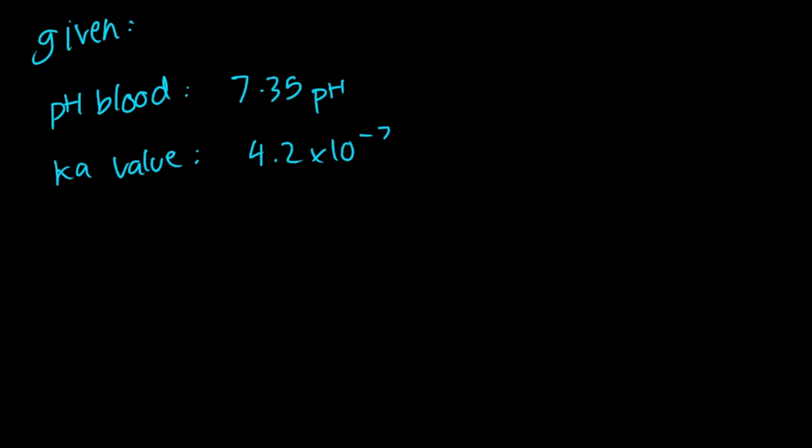So now using the formula, we're going to substitute the values with the given values, and we get 7.35 equals to negative log of 4.2 multiplied by 10 raised to negative 7, added by log x. So now we're going to substitute 4.2 multiplied by 10 raised to negative 7, which is 6.377, added by log x.